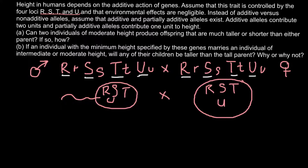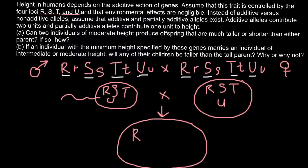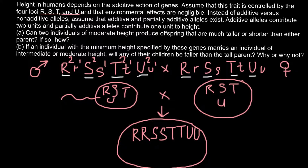The genotype of the offspring would be capital R, capital R, capital S, capital S, capital T, capital T, and capital U, capital U. We are told that capital R gives two units to tallness, and small r gives only one unit.